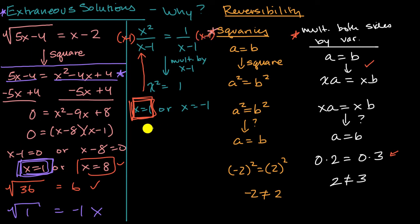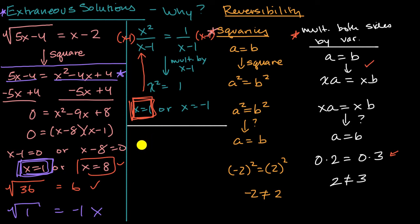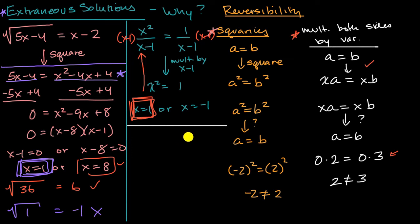The big takeaway is hopefully you understand why extraneous solutions happen. When you square or multiply both sides by a variable expression, it's completely legitimate as long as you do it properly, but it's not always the case that the reverse is true. You can add or subtract anything from both sides — that's always reversible and won't lead to extraneous solutions. You can multiply or divide by a non-zero constant value — that's also fine. But if you're squaring both sides or multiplying both sides by a variable expression, you should be a little bit careful.